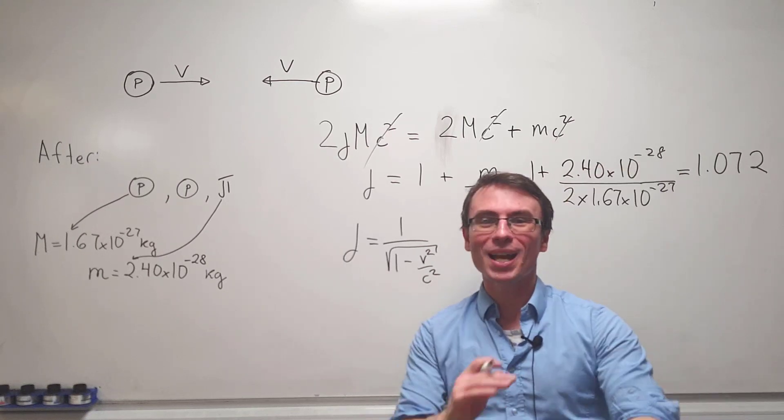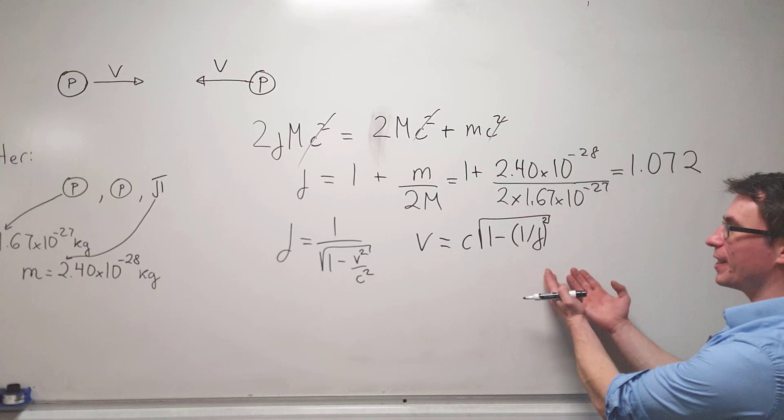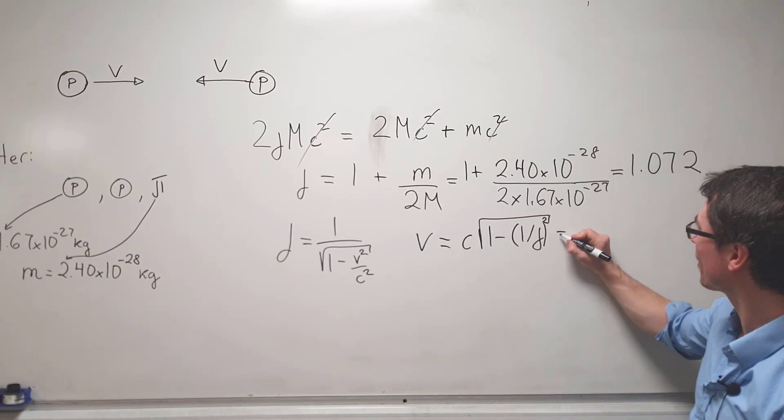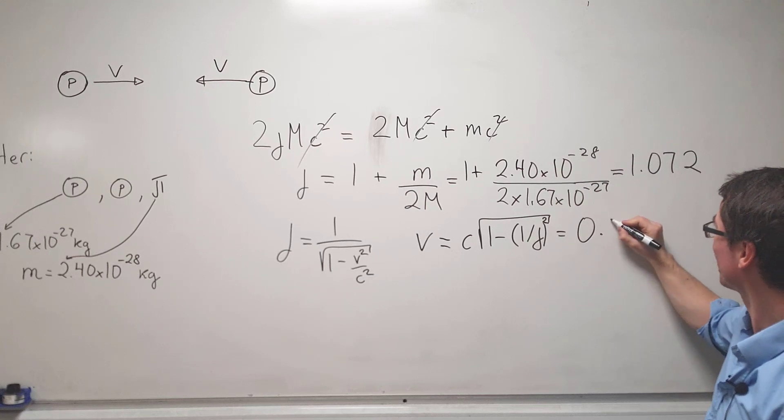We can rearrange this equation for the speed v. We can plug in directly the value for gamma, and if we do so correctly we're going to get...